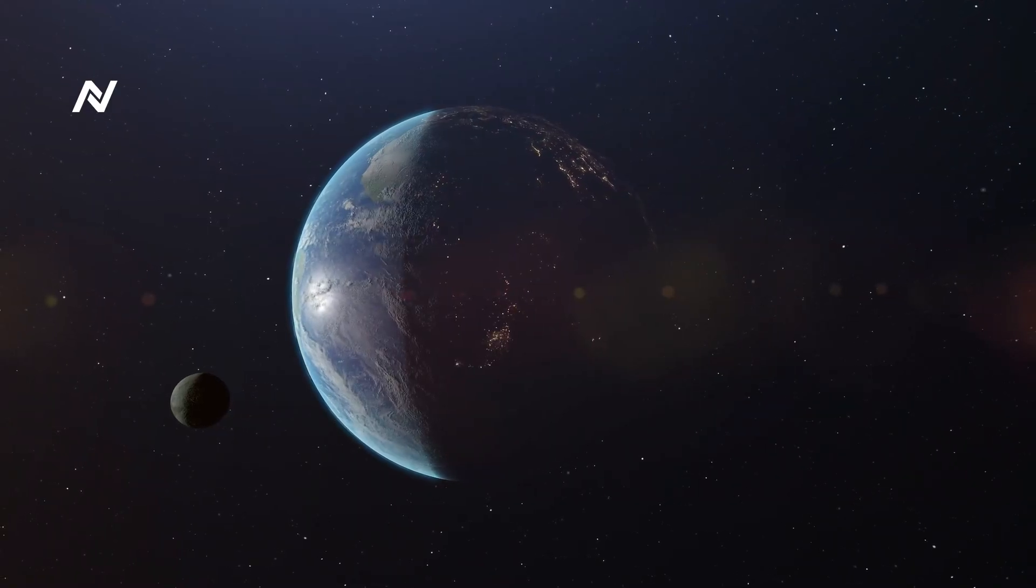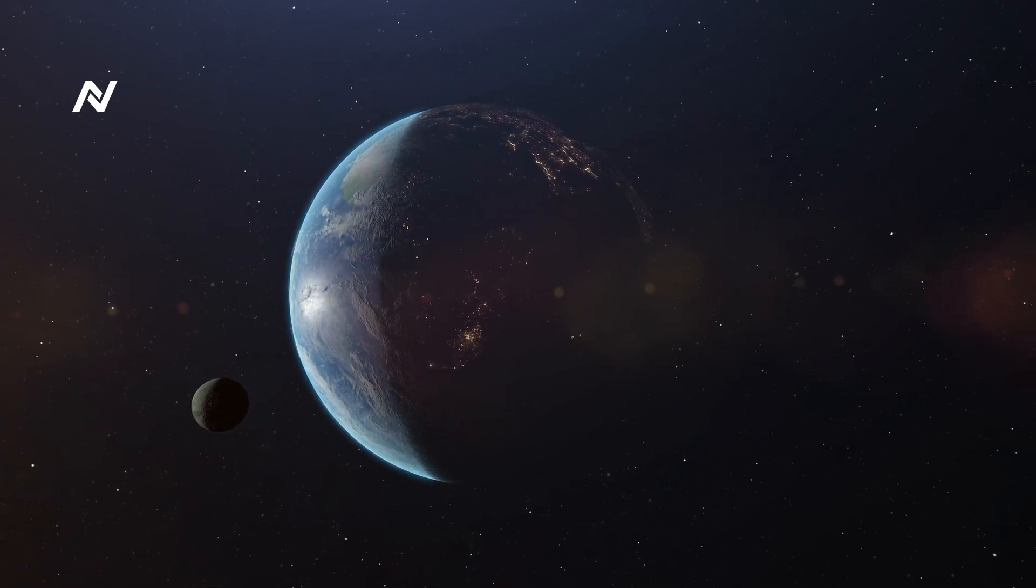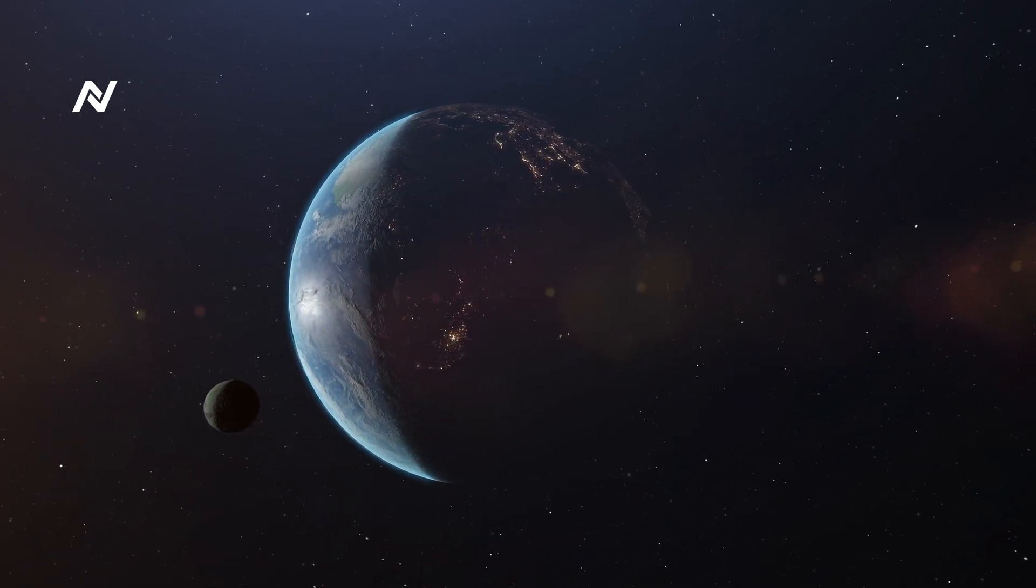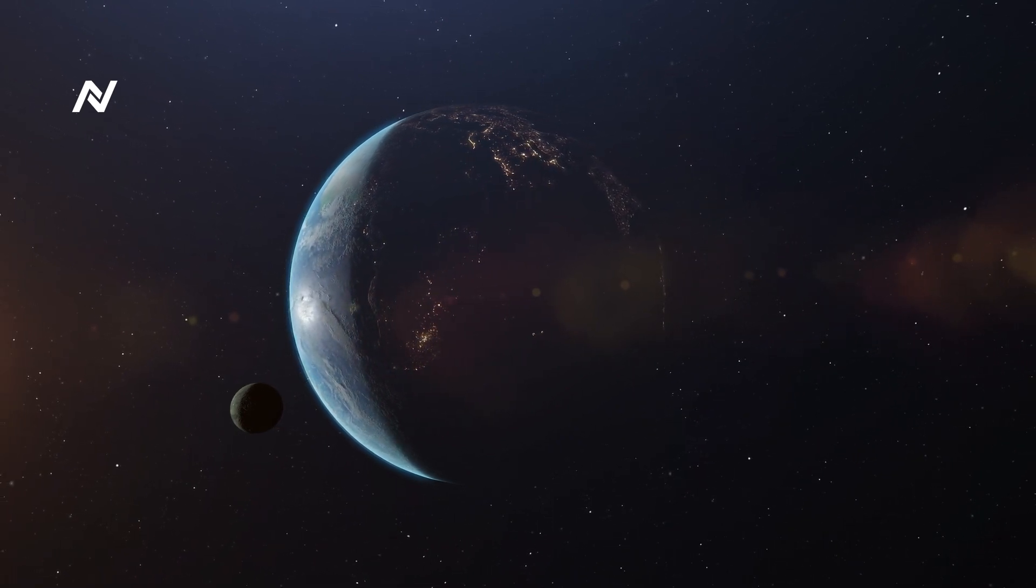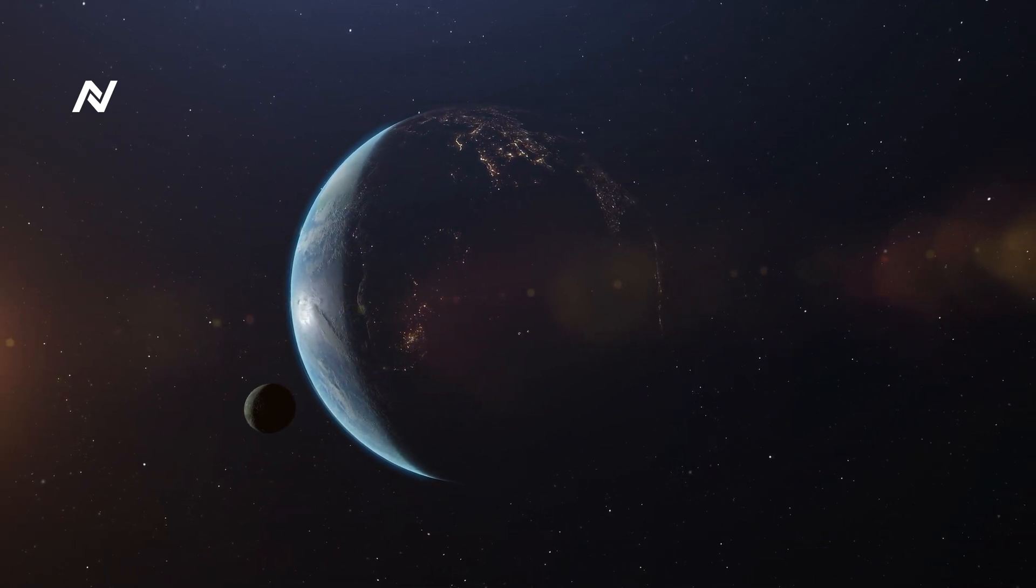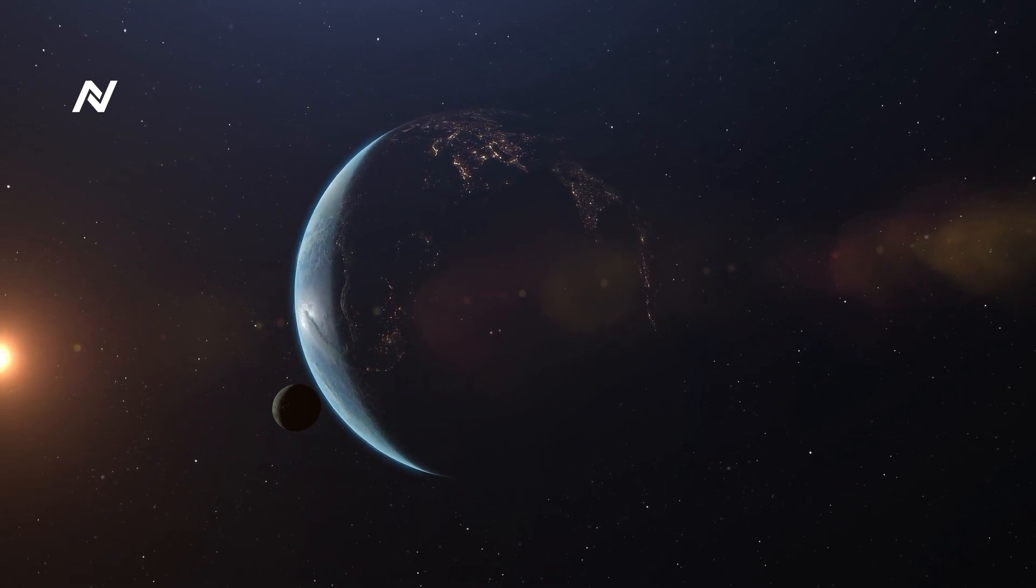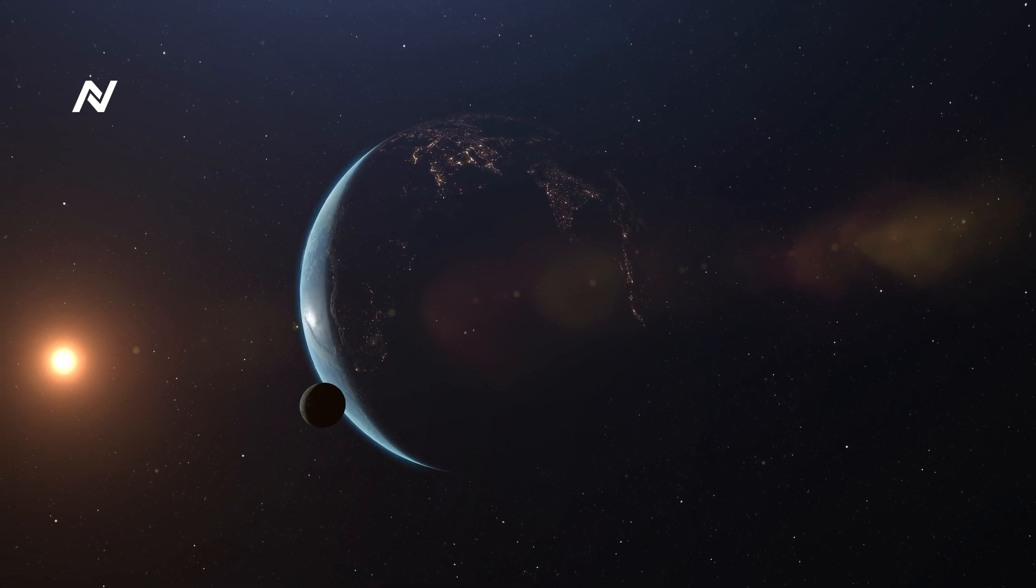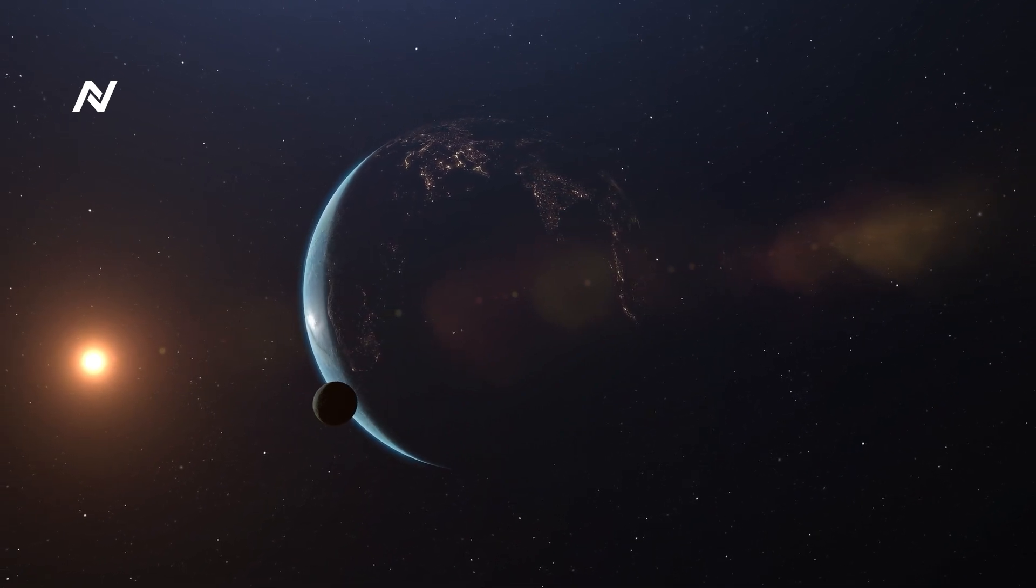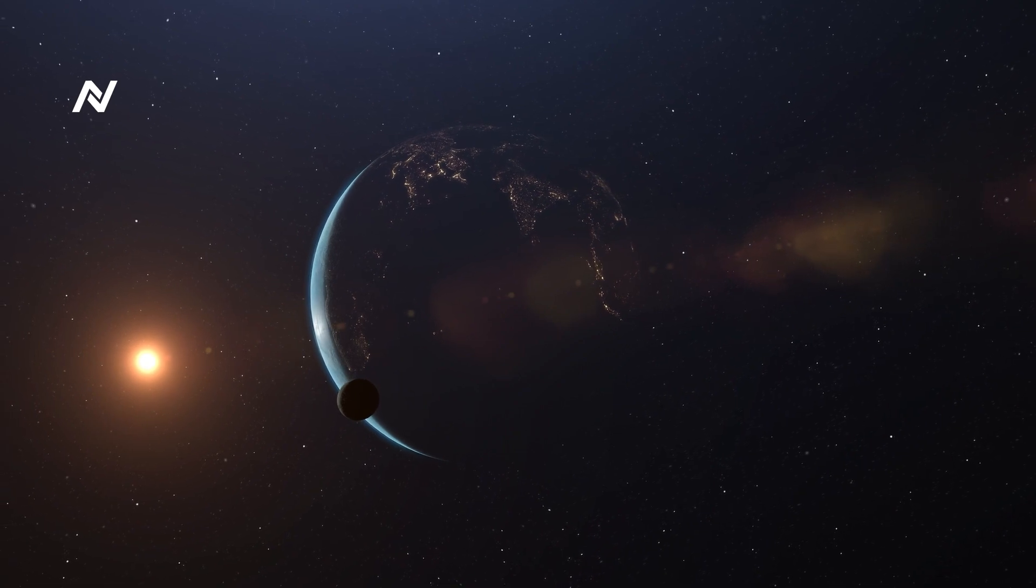Scientists are baffled by how closely this exoplanet resembles Earth, yet its geography appears as if seen through a cosmic mirror. The eerie symmetry has raised questions about parallel universes, cosmic duplication, and even the possibility of this planet being a literal reflection of Earth in space-time. What are the odds that such a twin world exists? Is there intelligent life living on the opposite side of our cosmic reflection?